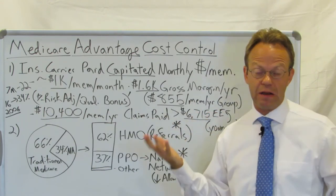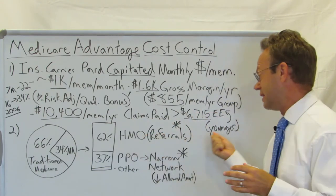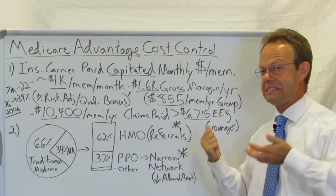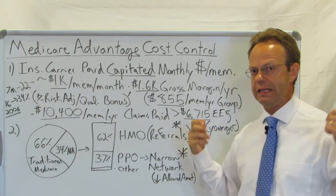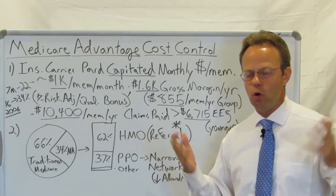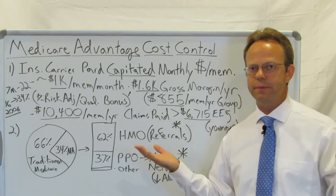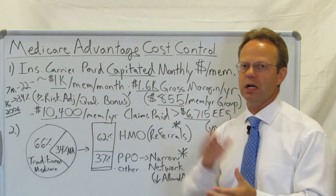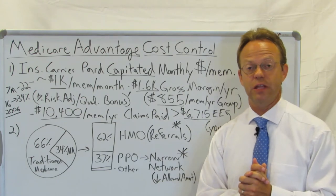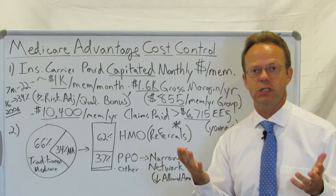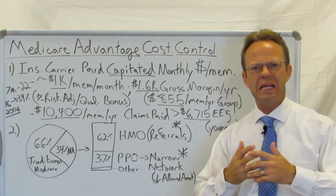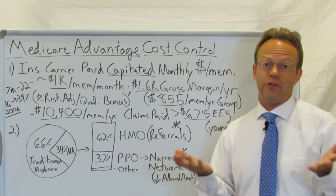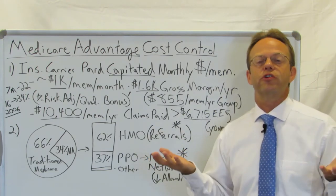Probably one of the main reasons for that is the population is younger on employer plans and tends to be not as sick. At the end of the day, we cannot stop the march of time, and Medicare Advantage is dealing with much, much sicker folks. That begs the question: what is Medicare Advantage doing for cost control, and is there anything that employers can learn from that?